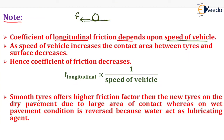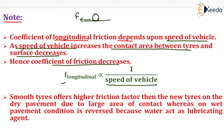As speed of vehicle increases, the contact area between tyres and surface decreases — hence the coefficient of friction decreases. So the coefficient of longitudinal friction is inversely proportional to the speed of the vehicle: if speed is very high then coefficient of longitudinal friction is very less, and vice versa.